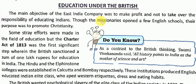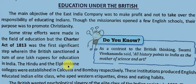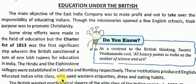Though the missionaries opened a few English schools, their purpose was to promote Christianity — they wanted to decline Indian religions like Islam and Hinduism. They wanted a population who thought in English but belonged to the educated Indian class. In this manner they could get a population who could work according to them.